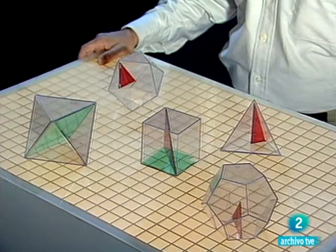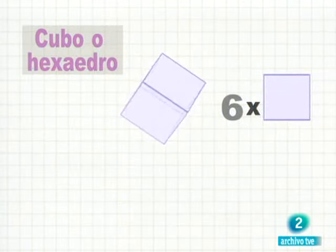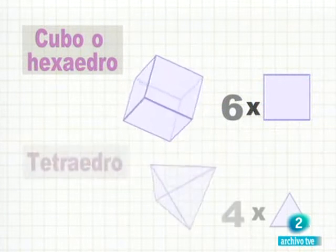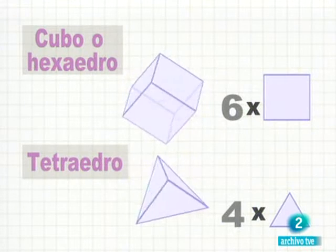Estos cuerpos son poliedros convexos. El nombre de Euler está íntimamente ligado a todos ellos. Este es un cubo. Está formado por seis cuadrados iguales.